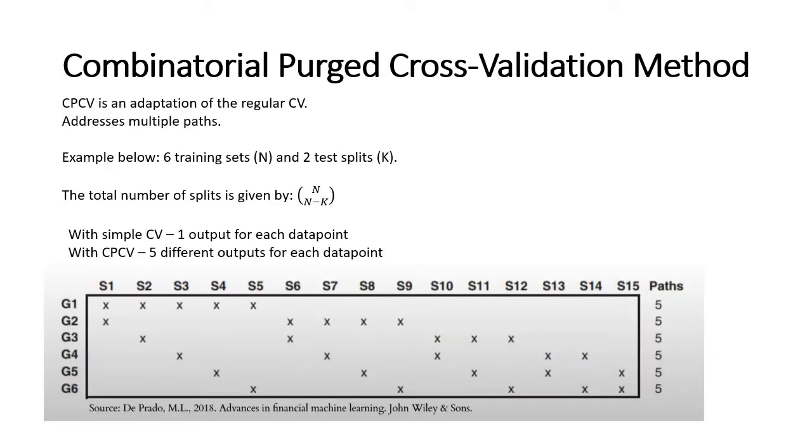As a different approach that addresses some of the drawbacks of both the walk-forward approach and the cross-validation method, Professor De Prado suggests the combinatorial purged cross-validation method. And this method is an adaptation of the regular cross-validation, but it also addresses multiple paths, multiple tests for the same data, or multiple forecasts, let's say, for the same datapoint.